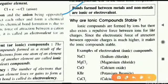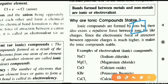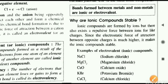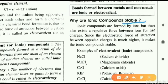Ionic compounds are stable because the ions carry opposite charges. Opposite charges attract each other through electrostatic force of attraction. Similar charges (positive-positive or negative-negative) repel each other, but the strong electrostatic force between opposite charges makes the ionic compound stable.